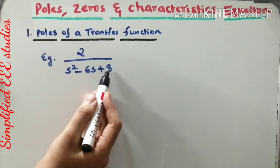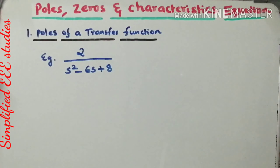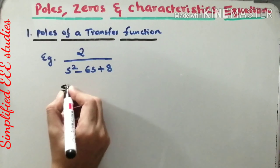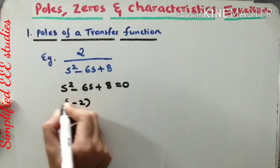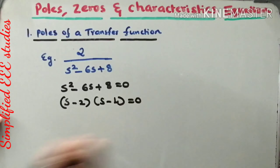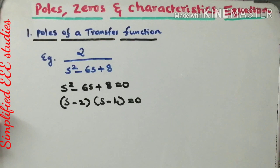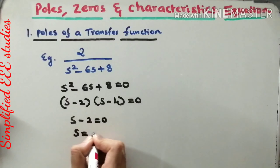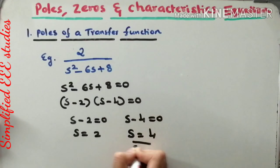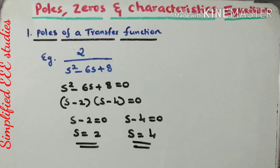Consider another example: T(s) = 2 / (s² - 6s + 8). Equate the denominator s² - 6s + 8 = 0. Factoring gives (s - 2)(s - 4) = 0. Therefore there are two poles: s = 2 and s = 4. Both poles are locating at the right half of the s-plane.